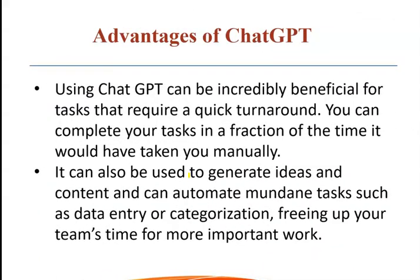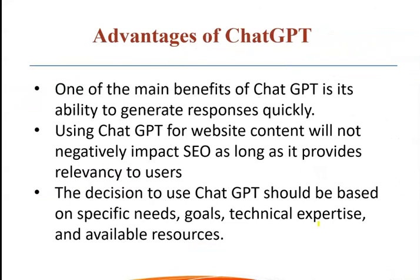When we use ChatGPT, it can be beneficial for tasks that take a lot of time or effort. We can complete tasks manually that would otherwise take much longer. We can generate ideas and content and automate mundane, repetitive tasks like data entry and categorization, freeing up teams' time for more important work. One of the main benefits of ChatGPT is its ability to generate a response to anyone. When you use ChatGPT for website content, it won't negatively affect SEO as long as users receive good, valuable information.